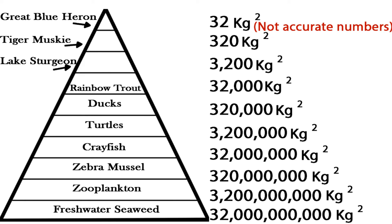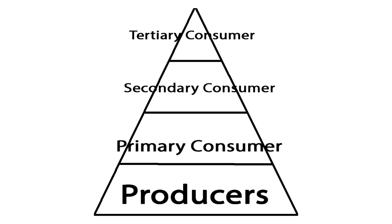The first pyramid we will take a look at is the Pyramid of Biomass. The purpose of the biomass pyramid is to illustrate the relative amount of biotic matter at each trophic level. You might be wondering what a trophic level is — a trophic level is the level an organism is in a food chain compared to other organisms. This trophic pyramid represents just that.